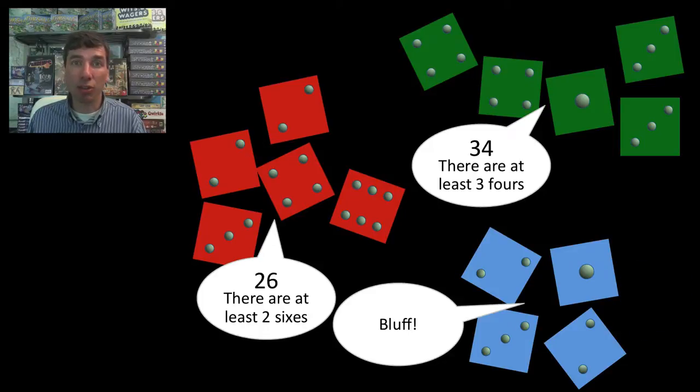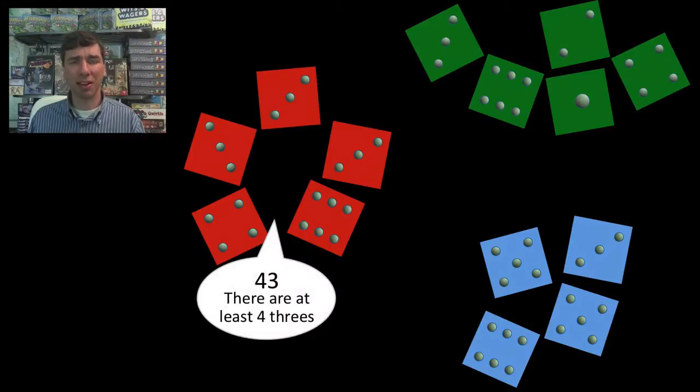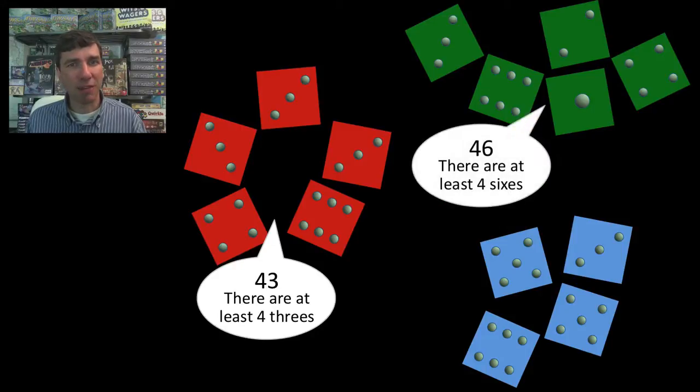Now it begins again with the group after the group that lost the dice. So they roll again. Here we have a really good roll by red. Look at that. Three threes. So red is feeling very confident. They're going to say, okay, I think that there are at least four threes out there. 43. Green says 43. There are at least four sixes.